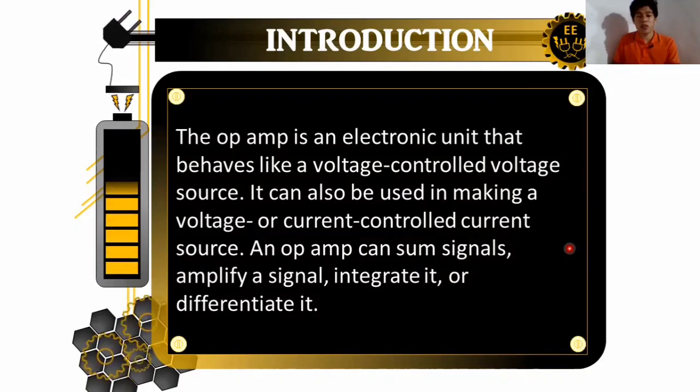The Op Amp is an electronic unit that behaves like a voltage-controlled voltage source. It can also be used in making a voltage or current controlled current source. An Operational Amplifier can sum signals, amplify a signal, integrate it, or differentiate it.